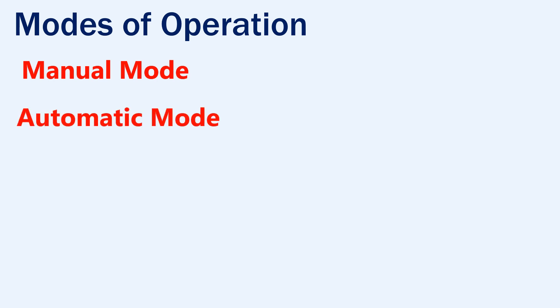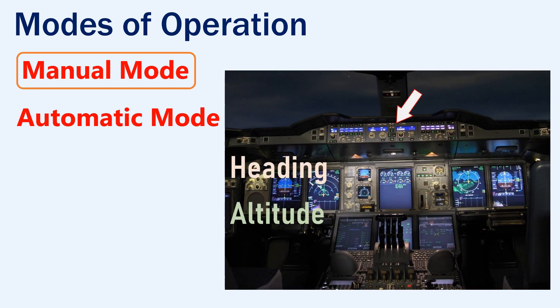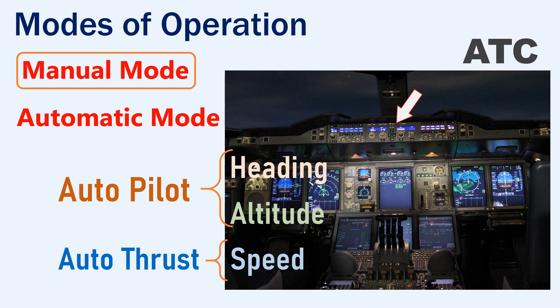The modes of operation of the autopilot. The autopilot can be operated in two modes. In manual mode, the pilot needs to continuously provide inputs such as the heading, the altitude, or the speed at which the aircraft needs to fly. These inputs will be sent to the autopilot and the autothrust computers, which will control the aircraft accordingly. The pilots will receive these instructions from the ATC. During flight, these inputs will be used for short duration only.